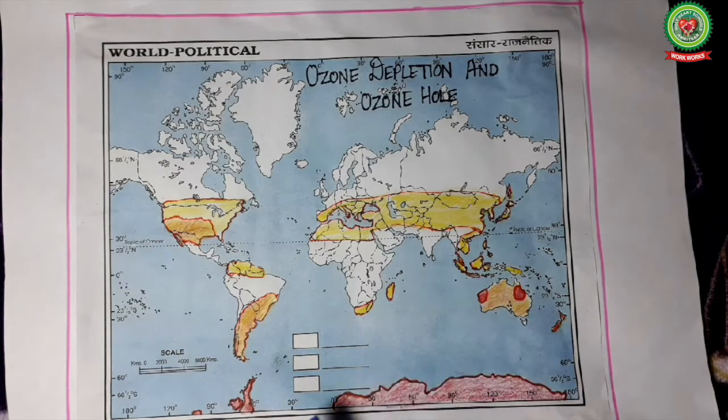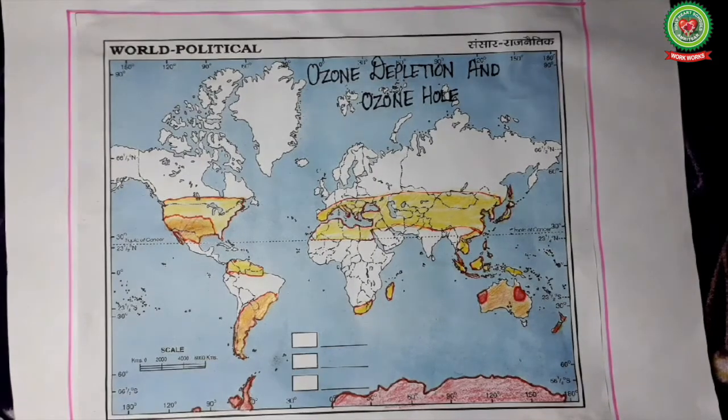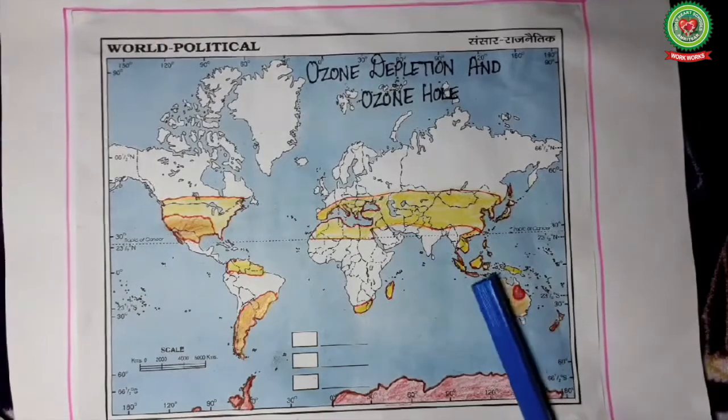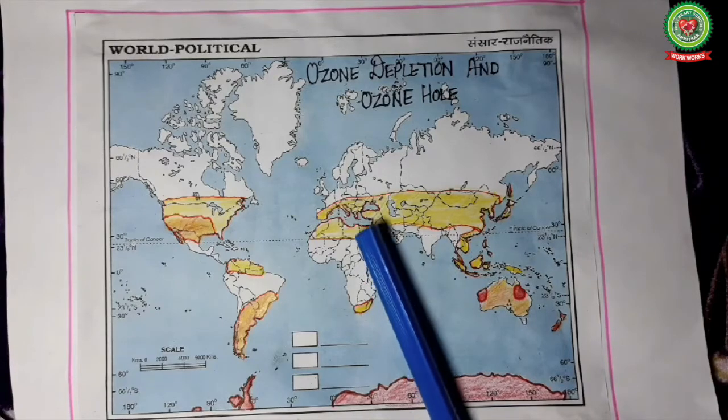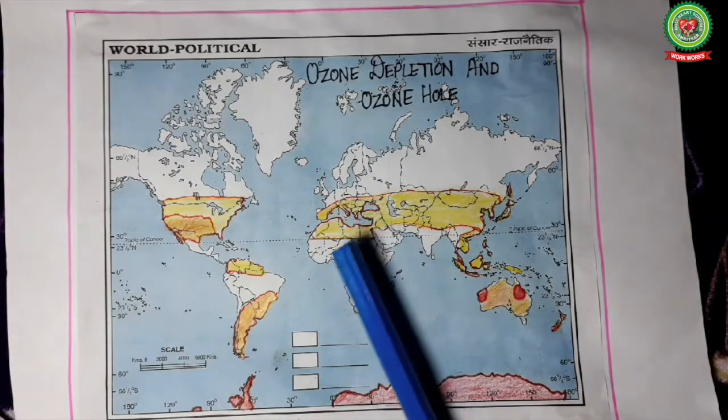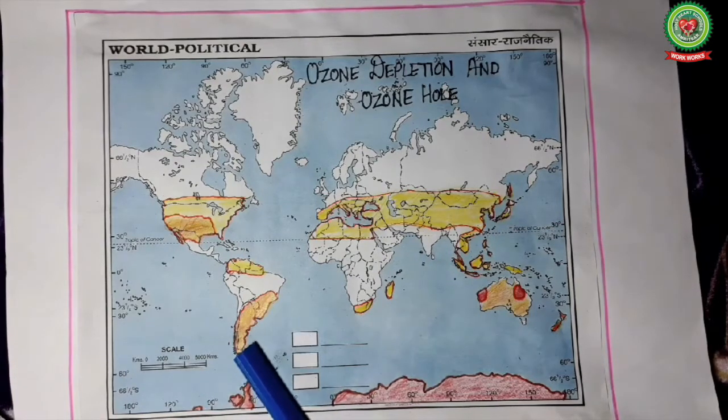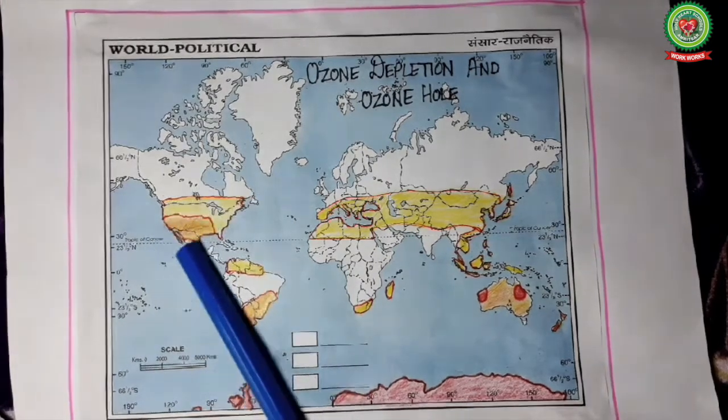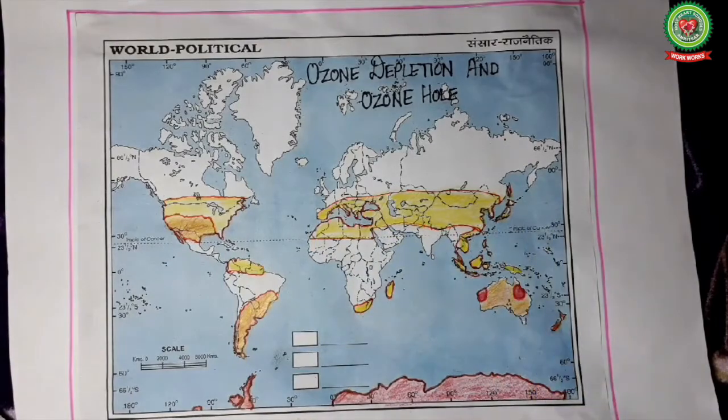This ozone hole in Antarctica is more pronounced towards South American sides, towards western countries like New Zealand, Australia, parts of Asia, parts of Africa, some countries of Europe, Argentina and Chile from South America, northern part of South America, the central part of North America is under the danger of ozone depletion and ozone hole.